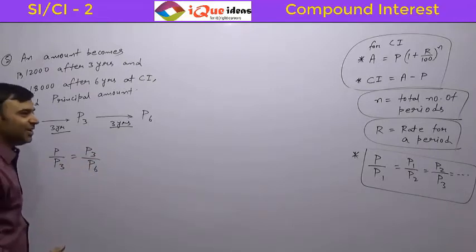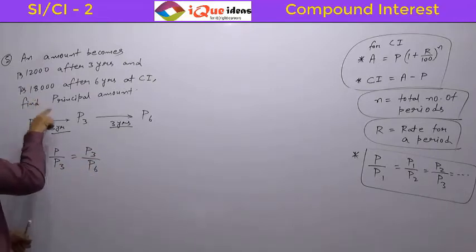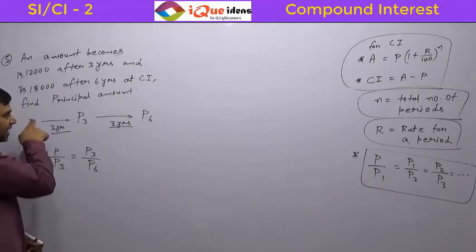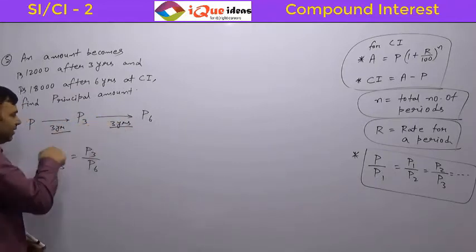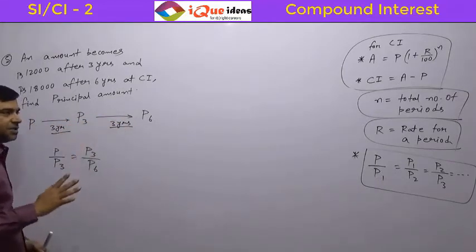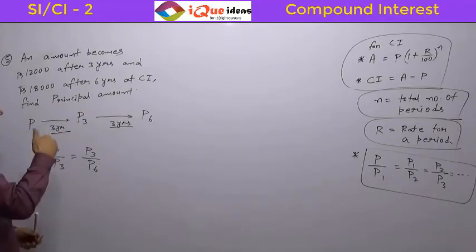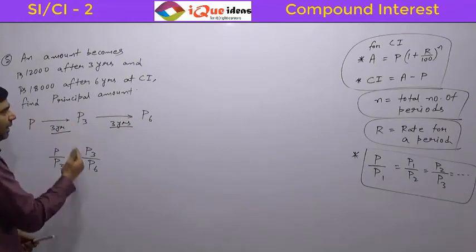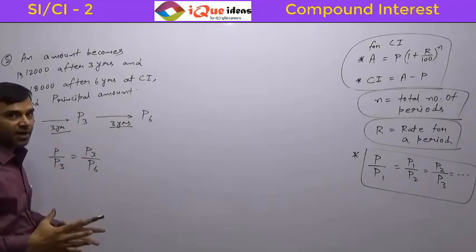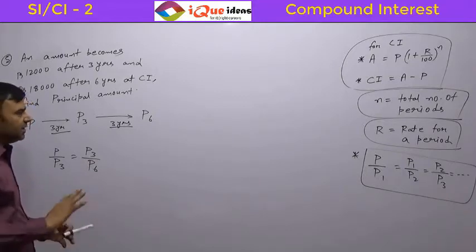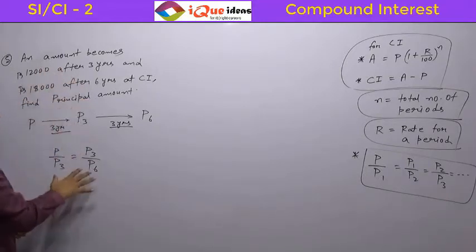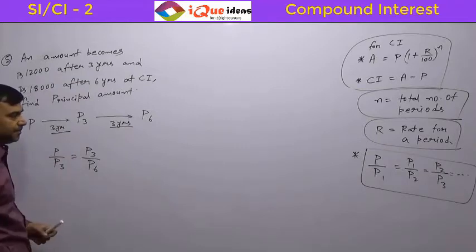The only thing you need to check is whether the periods are same or not. If the amounts are at the same gap, the same period, the ratios will remain constant. In exam questions, you will only be asked this type of question where the gaps are the same.